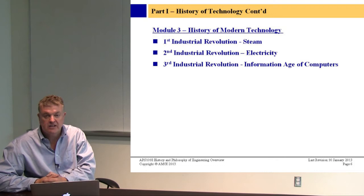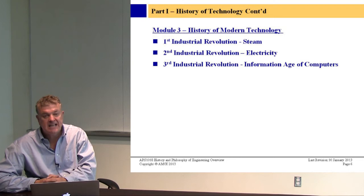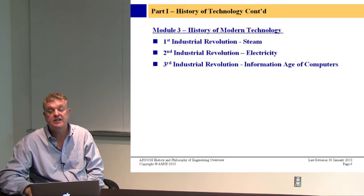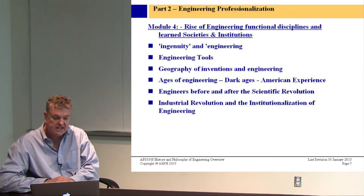We'll look at three industrial revolutions and drill down into them. The first Industrial Revolution was driven by steam. The second, in the late 1800s, was driven by electricity. The third deals with the information age and computers — basically the time we're in now. We're probably moving into a fourth Industrial Revolution, a fourth transformational revolution, to do with the knowledge society.